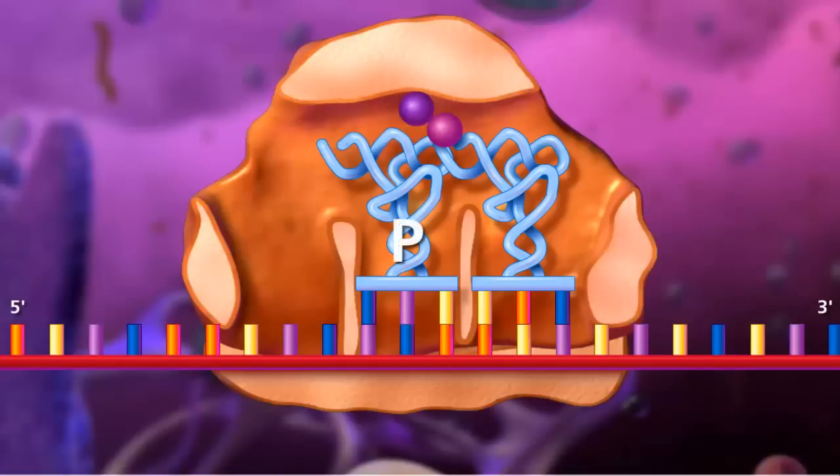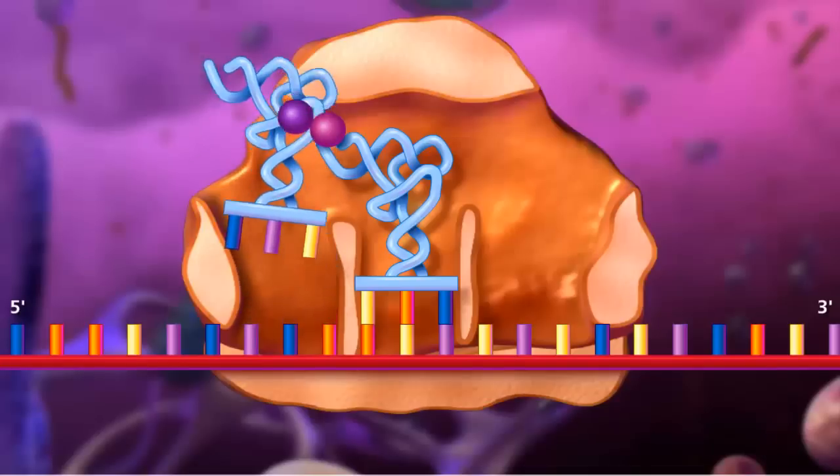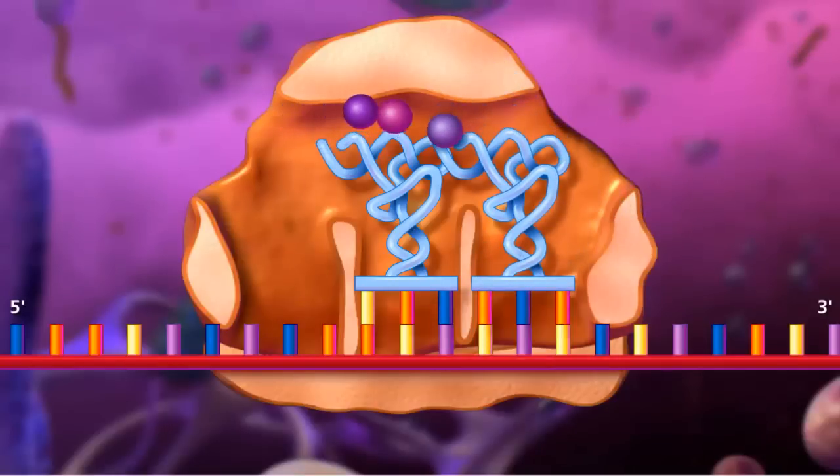The complex slides down one codon to the right, where the now uncharged transfer RNA molecule exits from the E site and the A site is open to accept the next transfer RNA molecule.